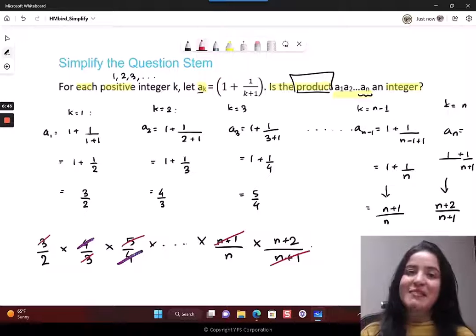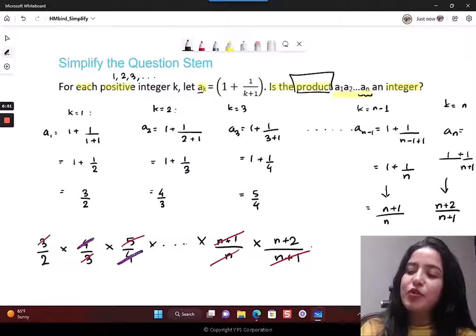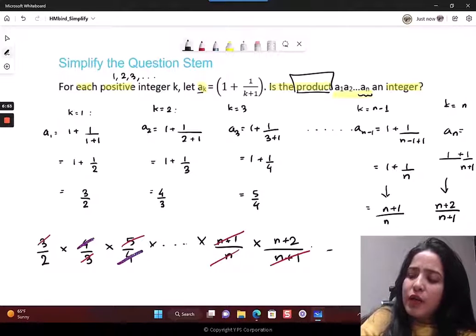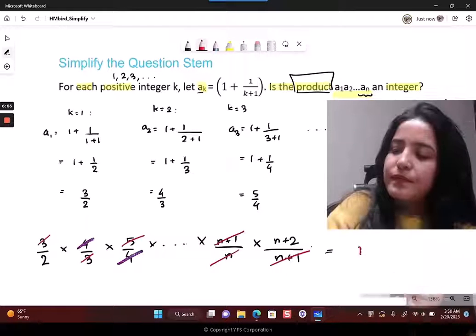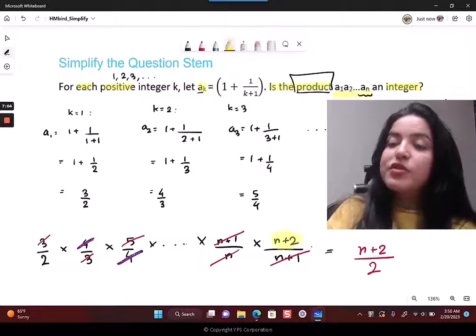Every numerator will be cancelled by the denominator of the next term. This way, till the end, this n plus 1 will also cancel out with the last n plus 1. This n will be cancelled by the previous numerator. You are only left with n plus 2 over 2.